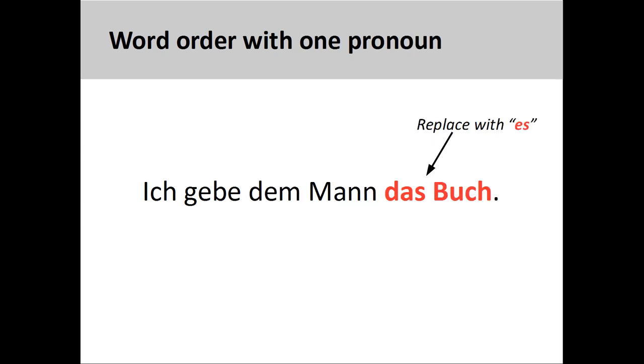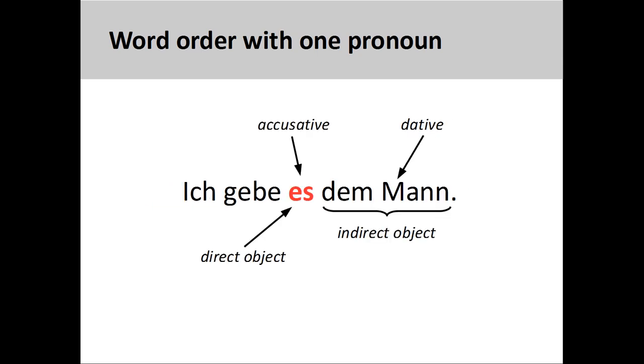But what if I want to replace one of the nouns with a pronoun? What if I want to replace the direct object, das Buch, with the neuter accusative personal pronoun, es? If one of the nouns in the direct-indirect object pair is replaced by a pronoun, that pronoun will come first in the pair. For example, ich gebe es dem Mann, I give it to the man.